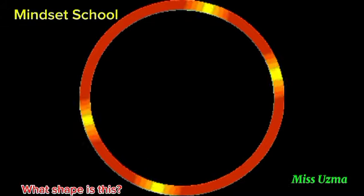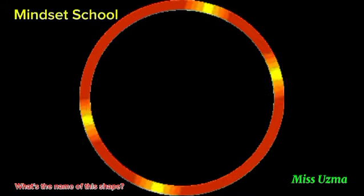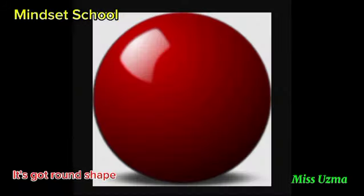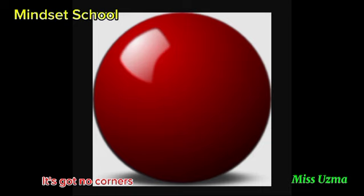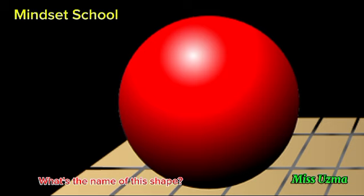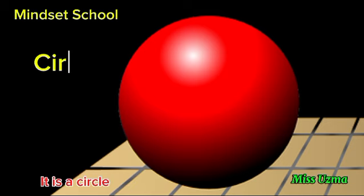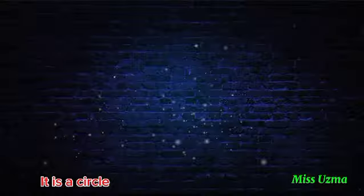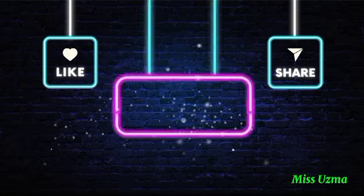What shape is this? What's the name of this shape? It's got a round shape. It's got no corners. What's the name of this shape? It's a circle. Bye-bye.